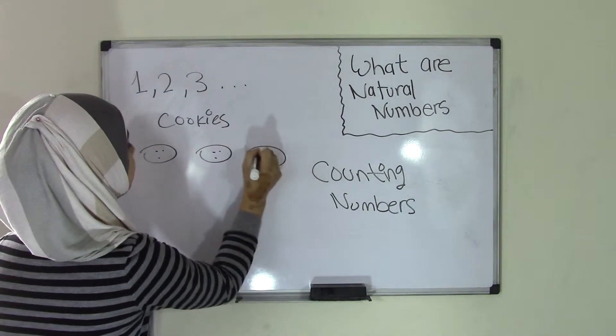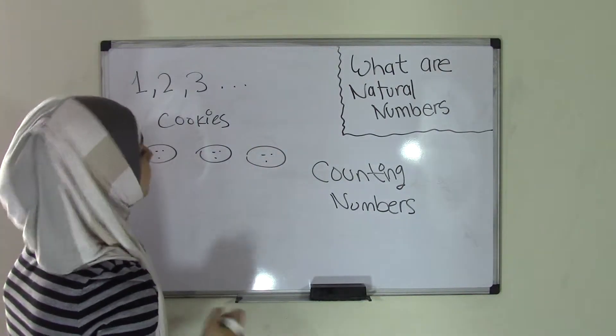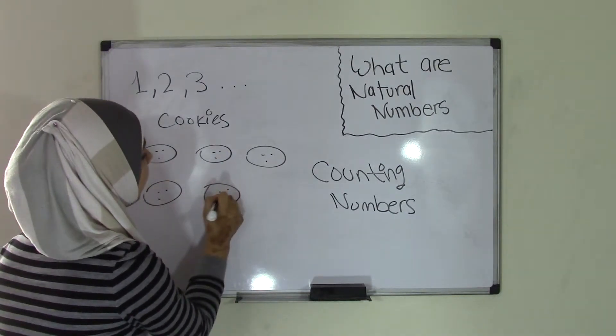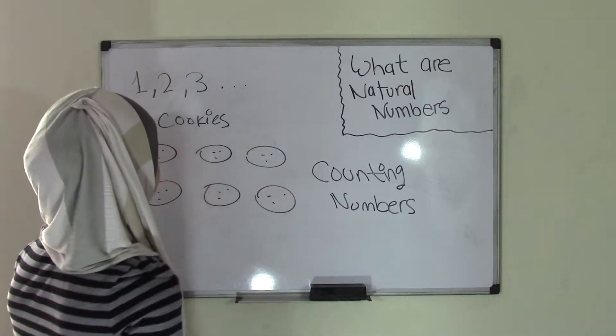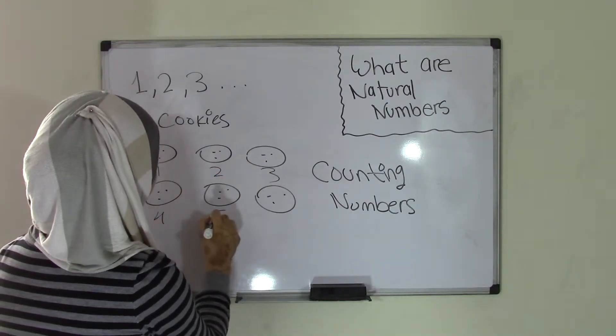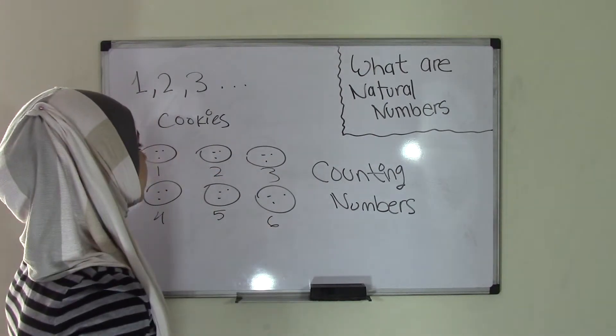So that is 1, 2, these look more like buttons than cookies, but they're cookies. 4, 5, and 6. I have, so 1, 2, 3, 4, 5, 6 cookies over here.